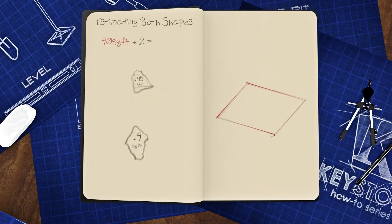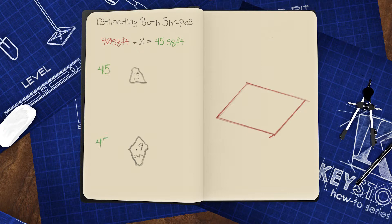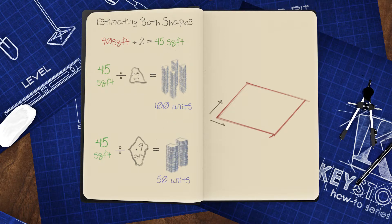Once you've determined your project's square footage, divide it in two. Then divide that square footage by 0.45 to get an estimate of the 12-inch shapes, and 0.9 to get an estimate of the 18-inch shapes.